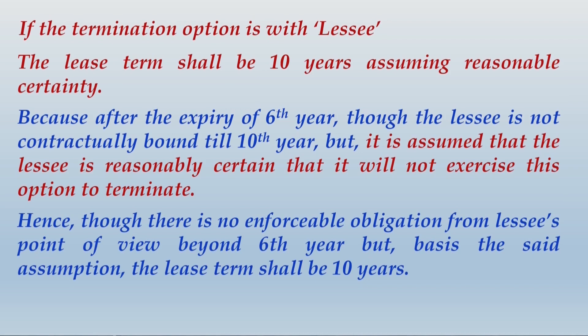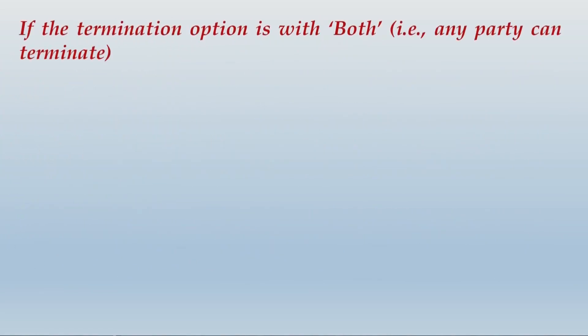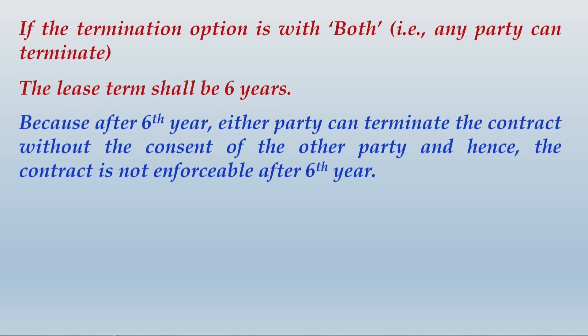Hence, though there is no enforceable obligation from the lessee's point of view beyond the sixth year, based on that assumption the lease term shall be ten years. In both possibilities, the lease term is ten years — when one party has the right to decide whether to terminate or not, it will be considered ten years. Now the other possibility: if the termination option is with both parties, any party can terminate or cancel the contract. After six years, since that is the lock-in period, the lease term shall be six years because either party can terminate without the consent of the other.